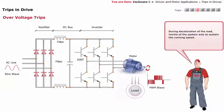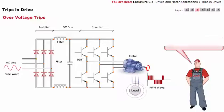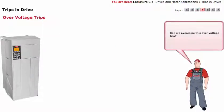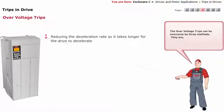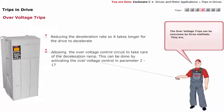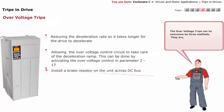Can we overcome this over voltage trip? Yes, we can. The over voltage trips can be overcome by three methods: reducing the deceleration rate so it takes longer for the drive to decelerate; allowing the over voltage control circuit to take care of the deceleration ramp, which can be done by activating the over voltage control in parameter 217; or installing a brake resistor on the unit across the DC bus.